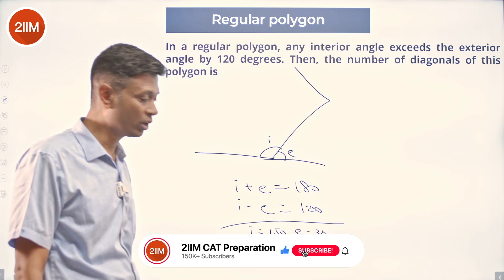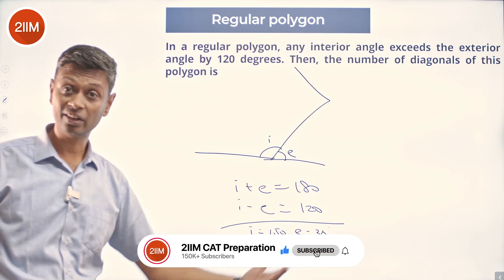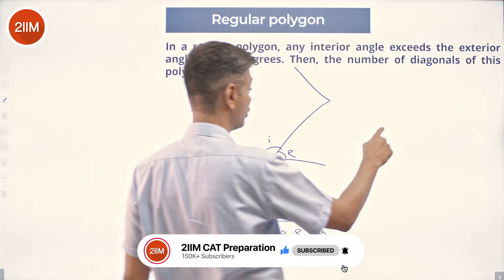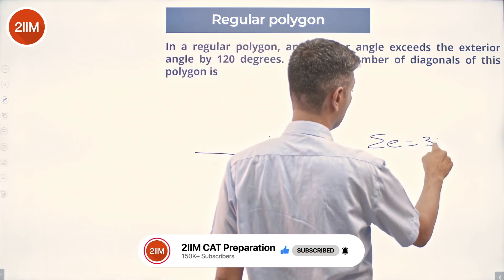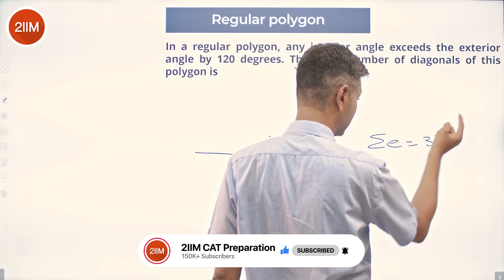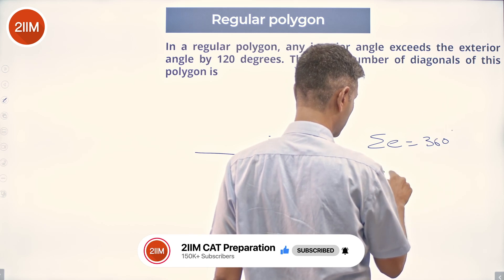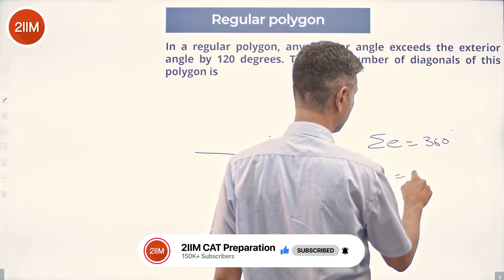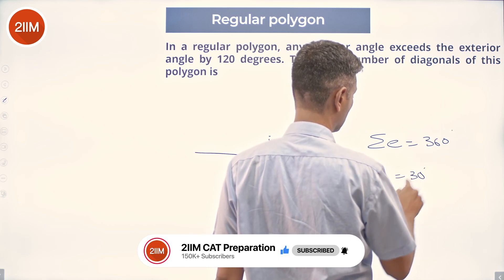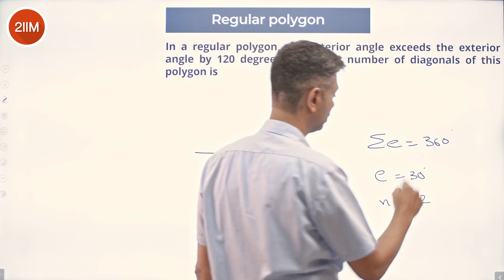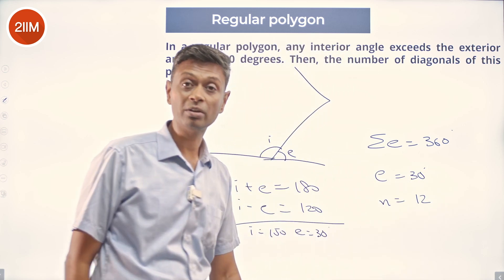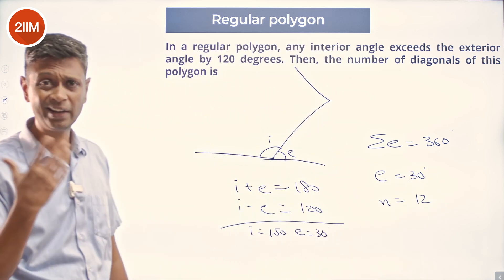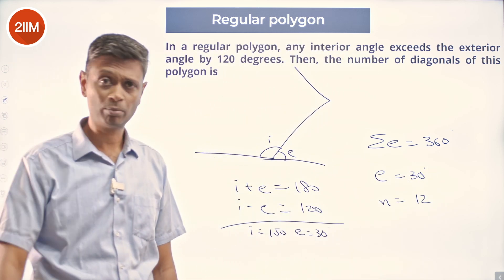For a regular polygon where the exterior angle is 30 degrees — the sum of all exterior angles is 360 degrees, and all exterior angles are equal, so each exterior angle is 30 degrees. Therefore the number of sides is 360 divided by 30, which gives 12. So it is a 12-sided regular polygon.